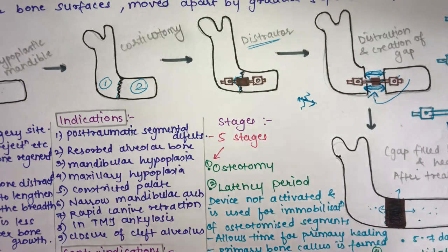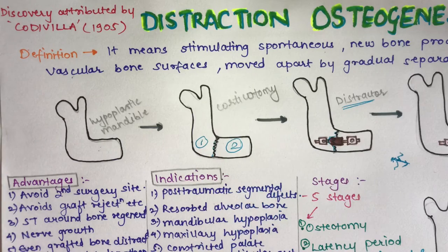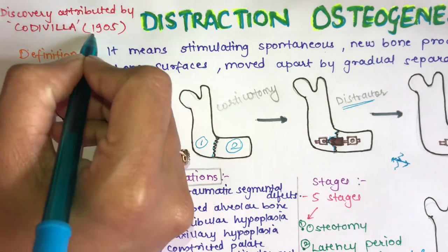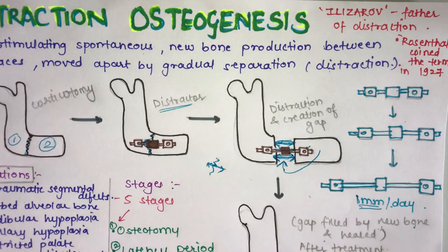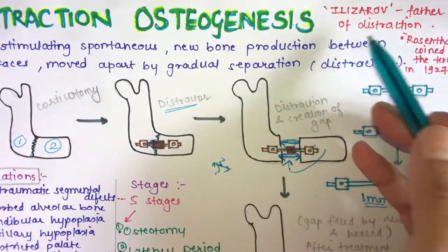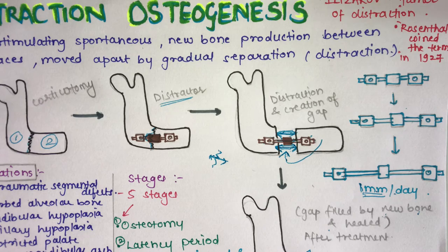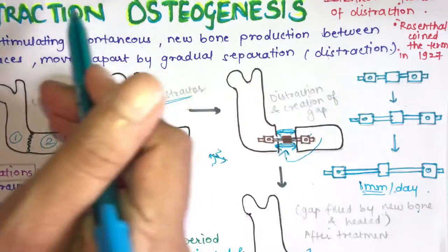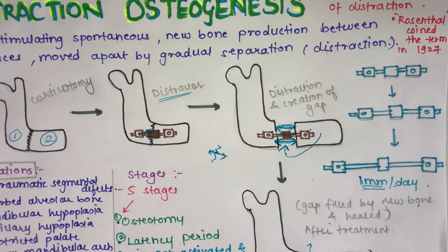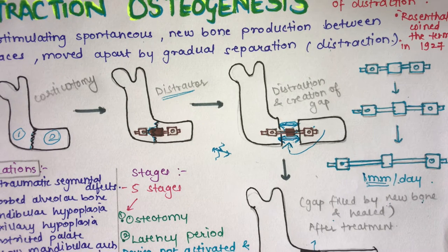The discovery of this technique was first attributed to Codivilla in 1905. Elizarov is considered the father of distraction and developed the distraction theory known as the Law of Tension Stress Effect. Rosenthal in 1927 coined the term 'distraction osteogenesis.' These are commonly asked in MCQs and can be included in the introduction part of a long-answer question on this topic.